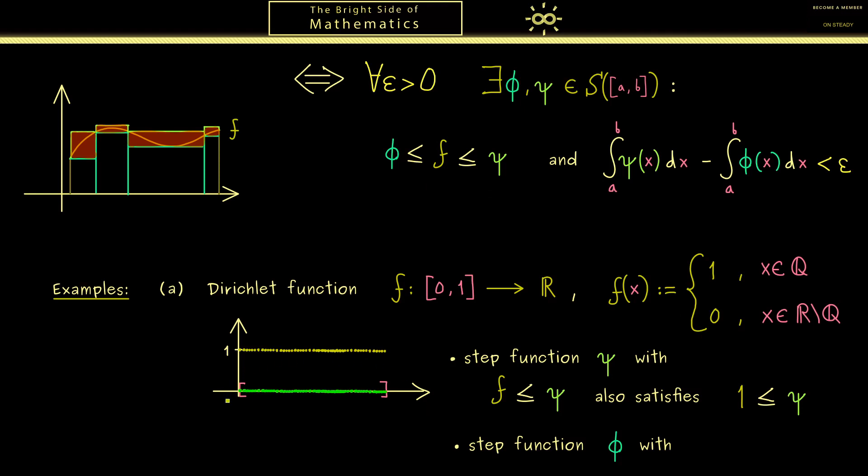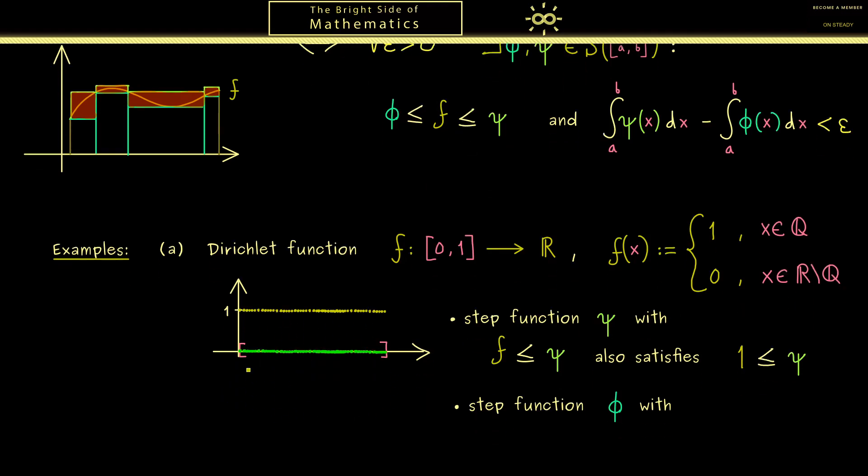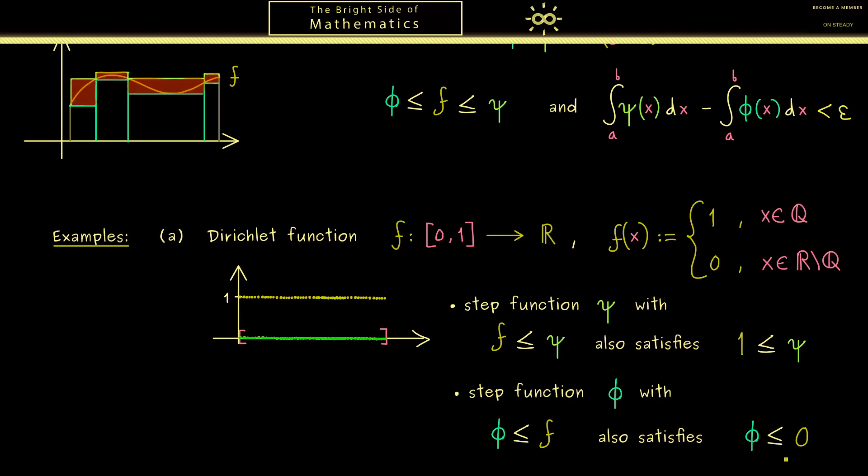Indeed the same holds for the irrational numbers when we want to choose a step function φ from below. There the step function also has to lie essentially below 0. In summary you see we have two properties here that hold for all step functions ψ and φ. And therefore we have immediately an estimate for the two integrals here.